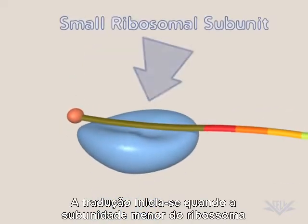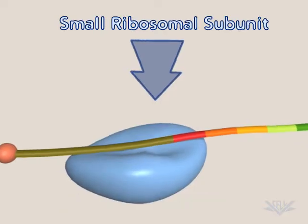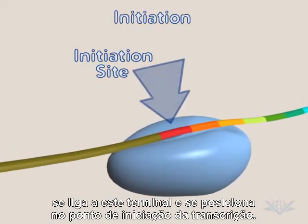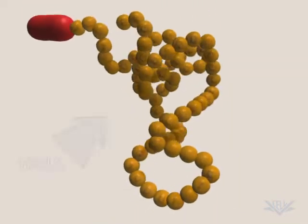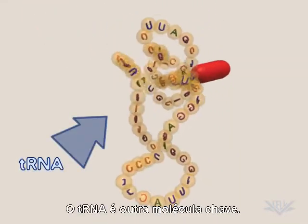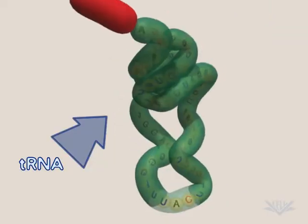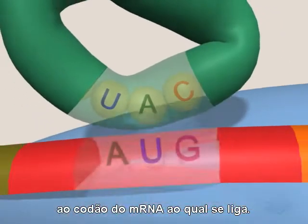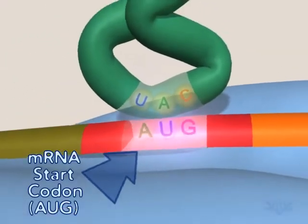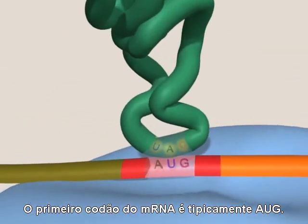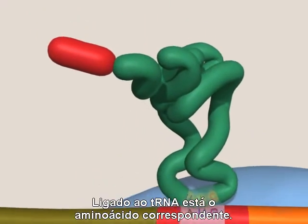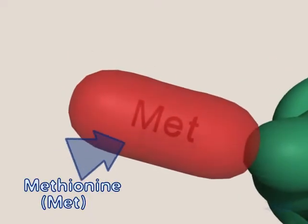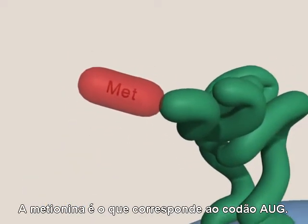Translation initiation begins when the small subunit of the ribosome attaches to the cap and moves to the translation initiation site. tRNA is another key molecule. It contains an anticodon that is complementary to the mRNA codon to which it binds. The first mRNA codon is typically AUG. Attached to the end of the tRNA is the corresponding amino acid — methionine corresponds to the AUG codon.